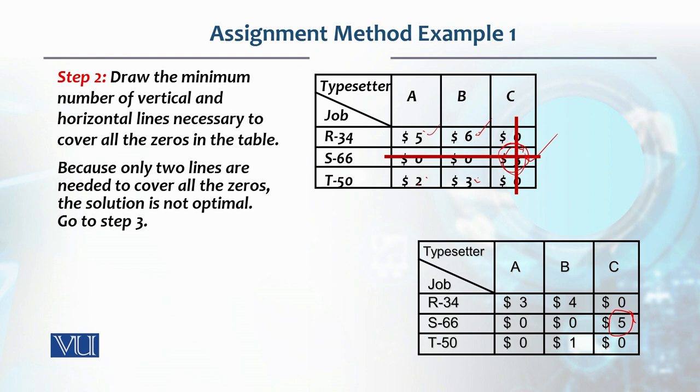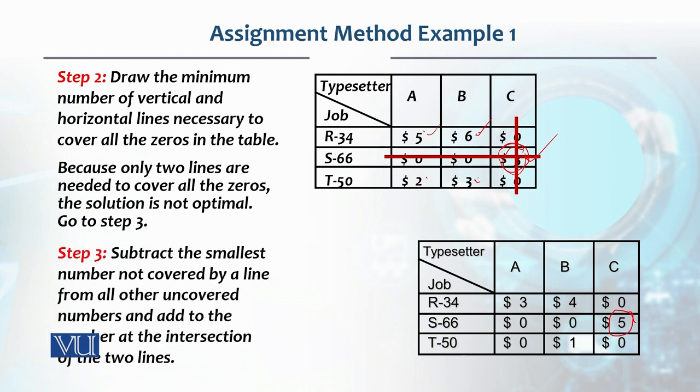And instead of five, three comes. But another step is that the number at the intersection is three, we will add this two to it. So now what we have is three, zero, zero, because two minus two is zero. Four, six minus two is four. Zero, one.